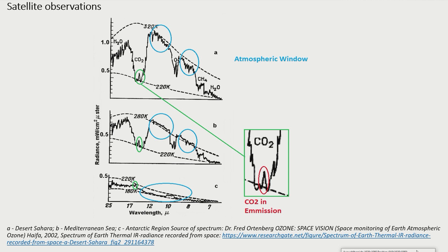Spectrum C was recorded over Antarctica. Here the Earth's surface is significantly colder than the upper part of the troposphere. Therefore, no CO2 absorption band is visible.